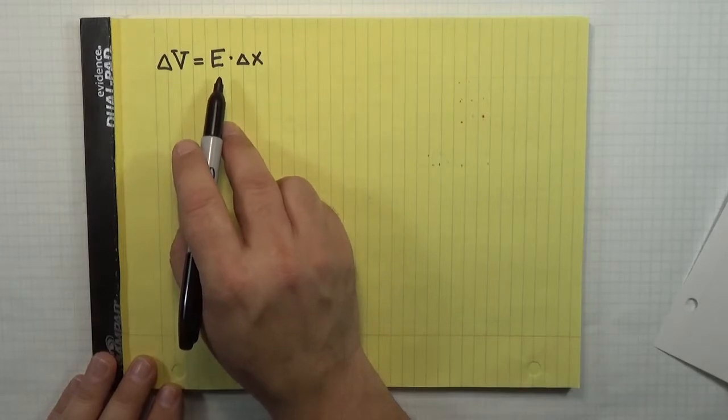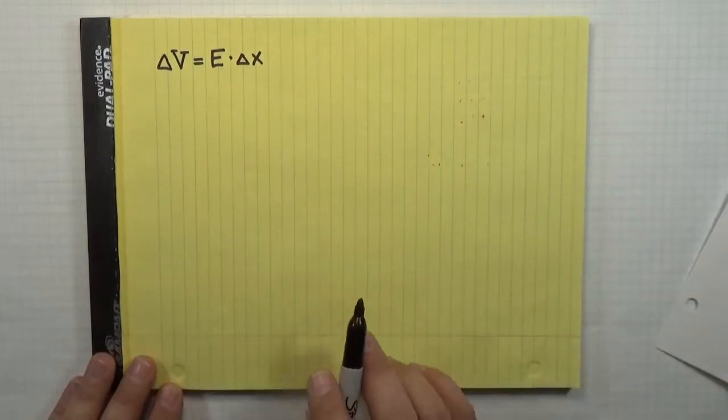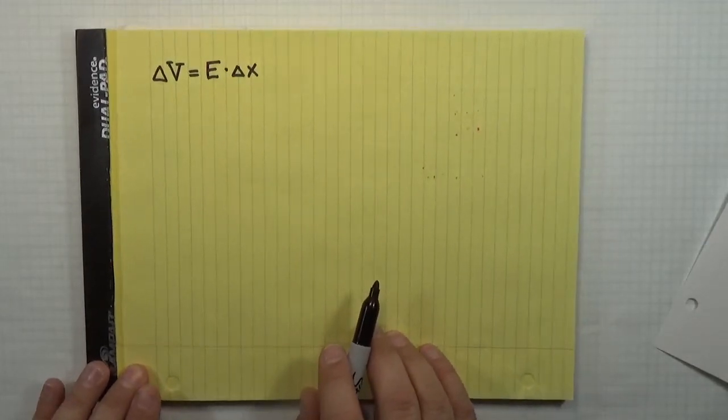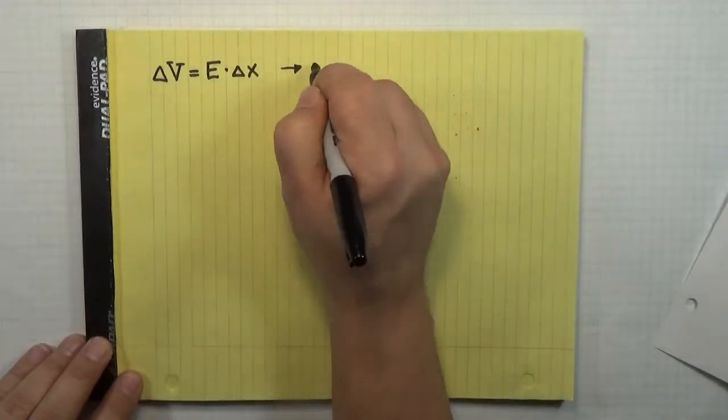This is a simple formula that we've been using for the kinds of problems we've been doing. I'll remind you that it is not in general true for very complicated electric fields. There's calculus in the way where you have to actually do an integral to do this properly if you're moving through a variable electric field. But for our case, the electric field is uniform, so we can solve this. So I'm going to solve this for the electric field.